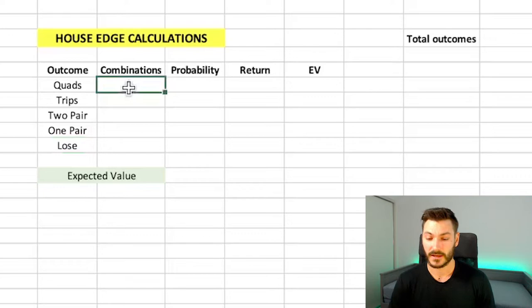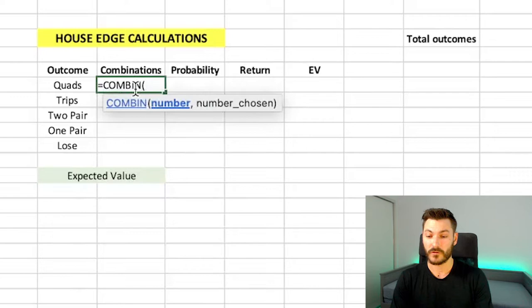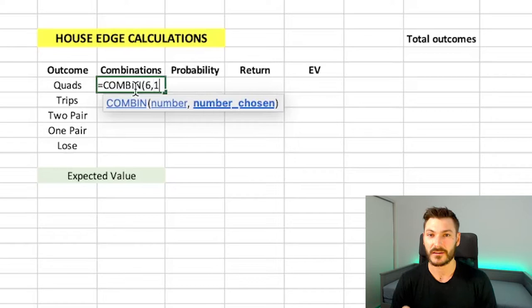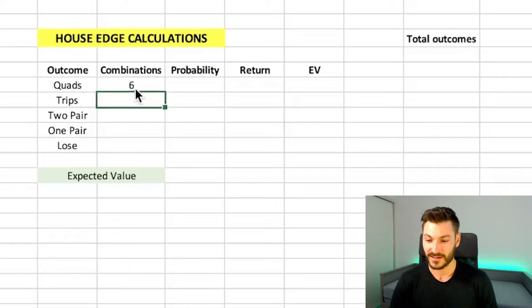Combinations. This is how many ways there are to get this outcome based on rolling four die. So for quads, there are only six ways to get quads. We either get four ones, four twos, four threes, four fours, all four fives, all four sixes. In terms of the maths, I'm going to type in equals COMBIN bracket and then of the six possible outcomes for my die, I'm choosing one. The second value in your formula is how many you're choosing from the previous number. I'm choosing one number out of the possible six to be my quads. Hit enter and the answer is six.